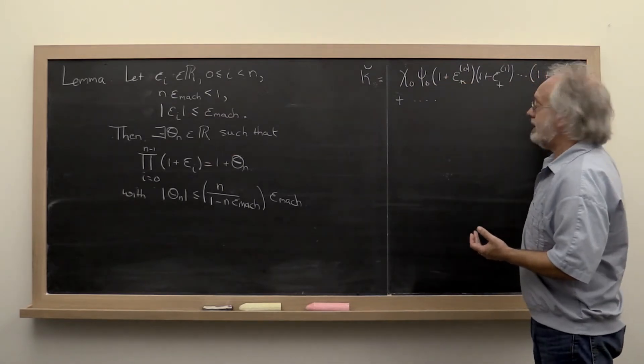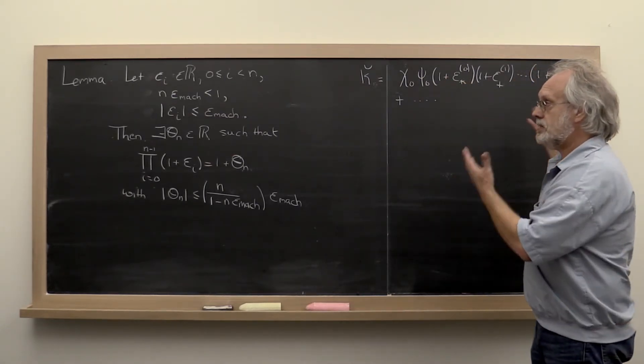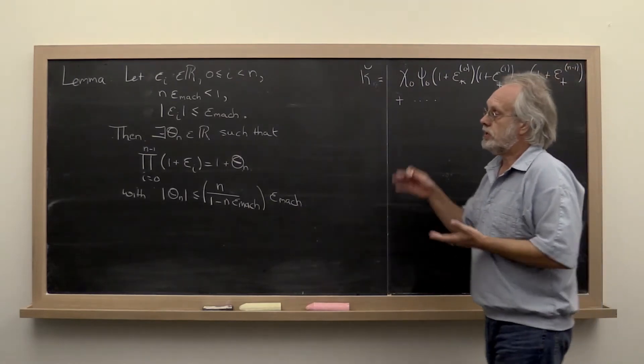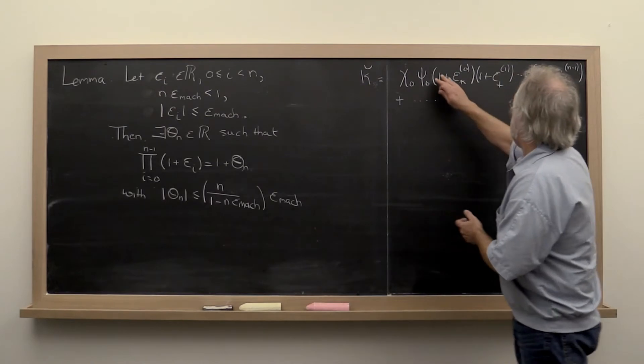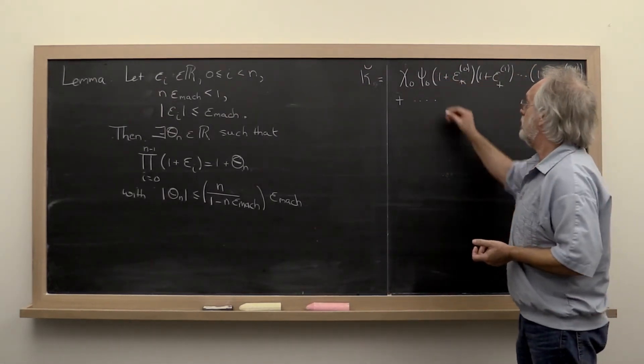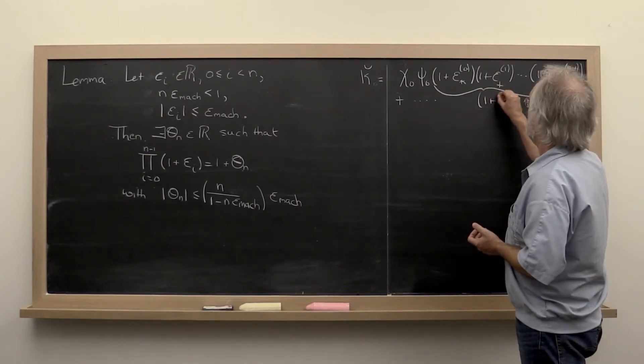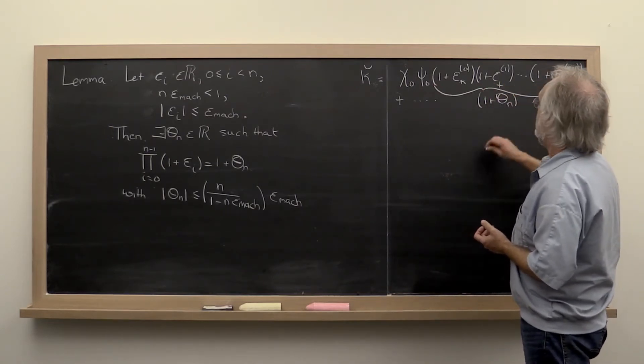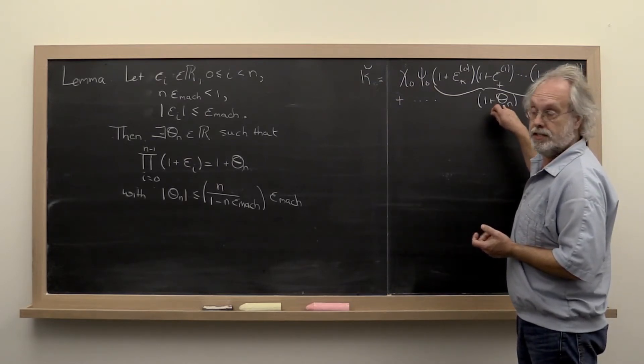And that kind of gets in the way of conciseness. So to make things simpler, we're going to introduce this lemma that allows us to take all of these terms and write them much simpler. Namely, we're going to be able to take all of these terms and just write them as 1 plus theta n and then put some bounds on theta n. That's the purpose.